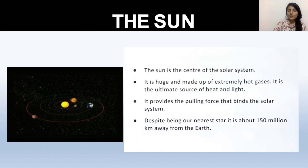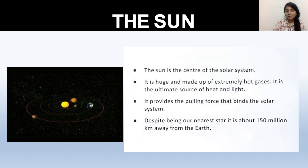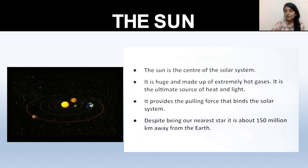Next is the Sun, the main highlighted topic. The Sun is the center of the solar system. It is extremely huge and made up of hot gases, and it is the ultimate source of heat and light — not just for the solar system but specifically for the Earth. It is nearly 150 million km away from the Earth.